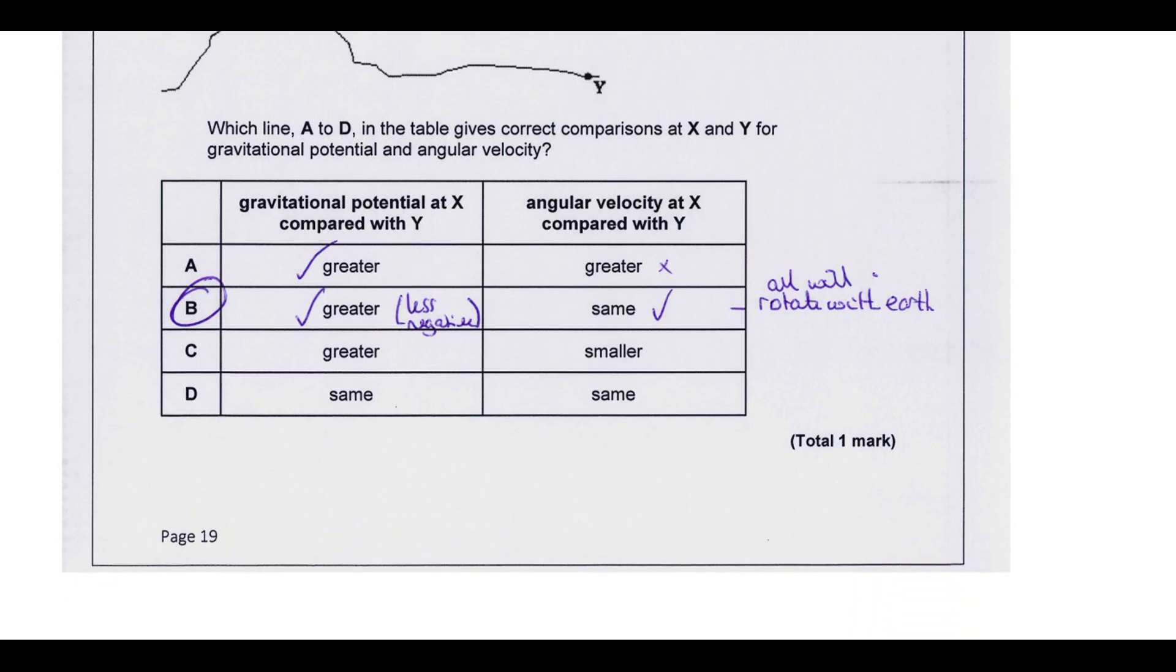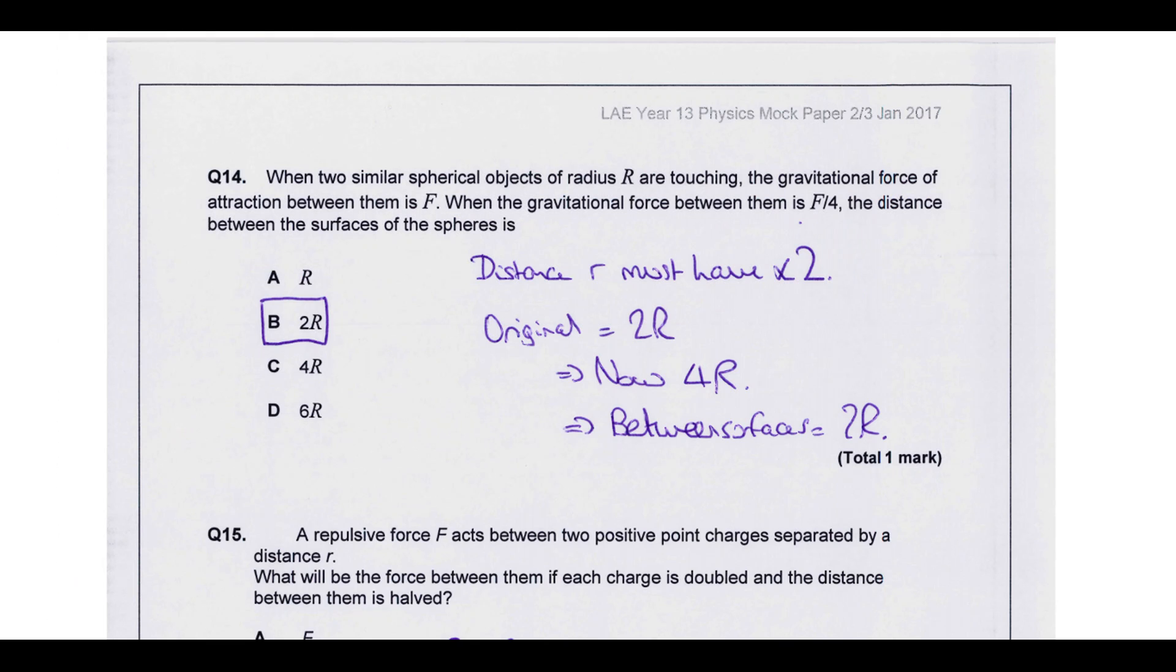Two similar spherical objects of radius r are touching. The force of attraction between them is f. When the gravitational force between them is f over 4, the distance between the surface of the spheres is... So if the force has been divided by 4, that means the distance is doubled because it's an inverse-square relationship. So to get f over 4, the distance is doubled. So to start with, the distance between the centres of mass was 2r because they both have a radius of r. So the distance between centres of mass is now 4r because it's doubled. So the distance between the surfaces then is going to be 2r. So that's option b.